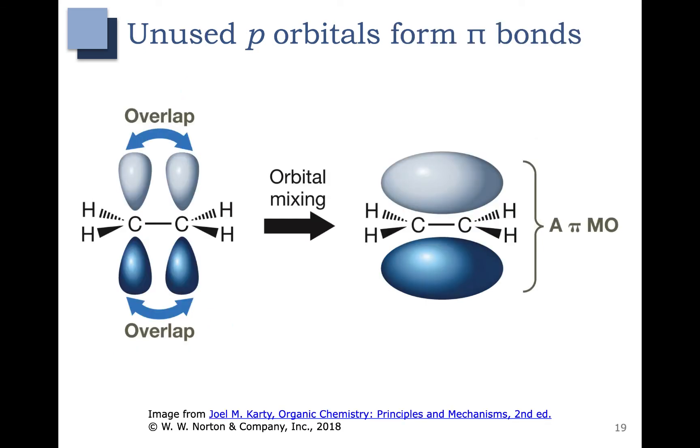p orbitals are used to form pi bonds. In this example here, you can see a p orbital on the left carbon, a p orbital on the right carbon. They mix and combine to form the pi bond. The pi bond is different from the sigma bond because it has a region both above and below the atoms. In the middle here is where the sigma bond is, and the sigma bond is formed by those sp2 hybrid orbitals coming together.